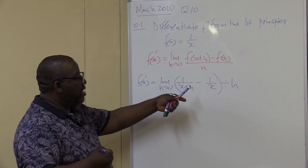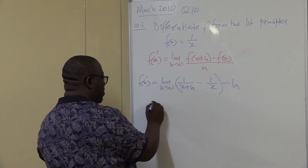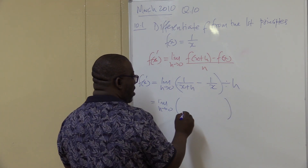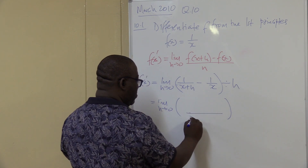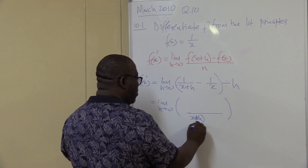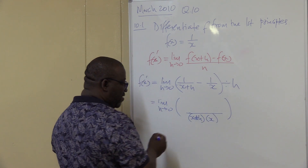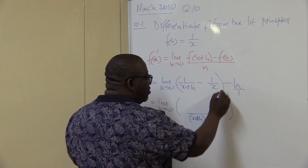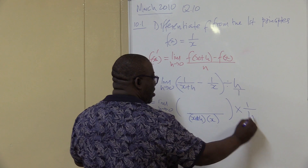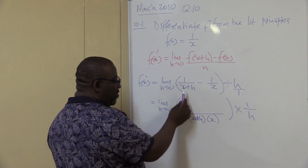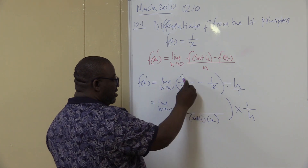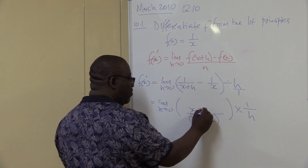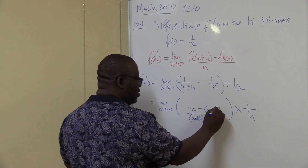Let's go further. For adding and subtracting fractions, you've got to look for the LCD. So this will be the limit as h approaches 0. The LCD here — I see x plus h and x — taking both gives x squared plus xh. Remember, this h is over 1, so if I change the sign to times, it will be 1 over h. Working this side: the LCD into the first fraction leaves x, and the LCD into the second fraction leaves x plus h.